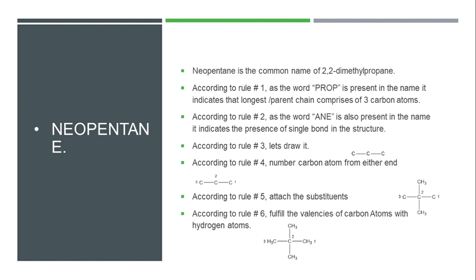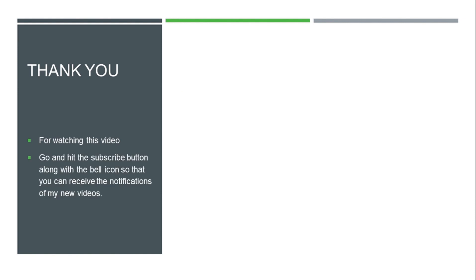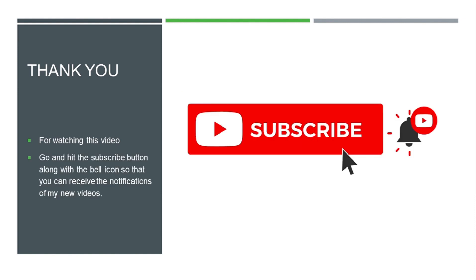In summary, we have 6 rules to follow. Rule 1: identify the number of carbon atoms with the help of the prefix table. Rule 2: identify the type of bonding with the help of the last three alphabets of the IUPAC name. Rule 3: draw the structure on paper. Rule 4: number the carbons. Rule 5: attach the substituents at their respective carbon atoms. Rule 6: fulfill any remaining valences of carbon atoms with hydrogen atoms. In this way, we can draw any compound on paper using its IUPAC name. Thank you for watching — please subscribe and click the bell icon to receive notifications of new videos.